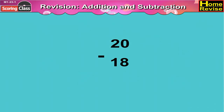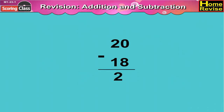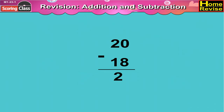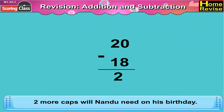We will have to subtract 18 from 20. 20 minus 18 is 2. So, 2 more caps will Nandu need on his birthday.